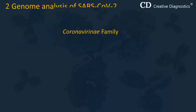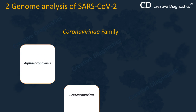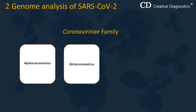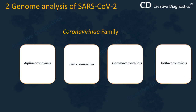The Coronavirini family consists of four genera based on their genetic properties, including genus alpha coronavirus, genus beta coronavirus, genus gamma coronavirus, and genus delta coronavirus.